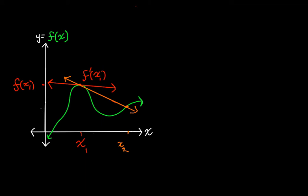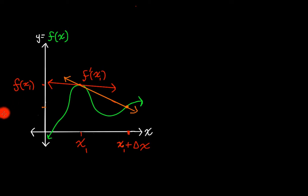What's the slope of this? We have f of x2 here. Before we move forward, I want to simplify this a little further. Instead of using x2, let's use a variable that references x1 — let's do x1 plus some change in x, some difference between these two points. That way, instead of f of x2, we have f of x1 plus delta x, just so that we can get everything in terms of x1.